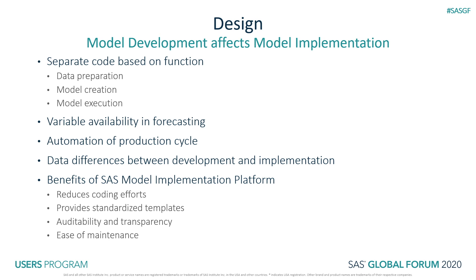Additionally, variable availability should be considered in model development. For example, variables such as the occurrence of a natural disaster may be highly predictive for default probability, but may not be available in the production cycle. Process automation should also be considered. Some data may require manual preparation for model development, and it should be considered how that manual preparation will be automated for the CECL production cycle. It might be necessary to redesign or remove that data preparation component so that it can be incorporated into the overall CECL process.